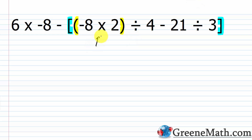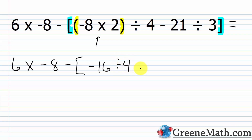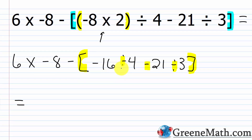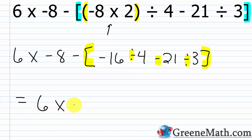Staying inside the brackets, we have division, subtraction, and division. We do negative 16 divided by four first. Negative divided by positive is negative, 16 divided by four is four — so that's negative four. Now inside the brackets we have: negative four minus 21 ÷ 3. Division is higher priority, so 21 divided by three is seven.